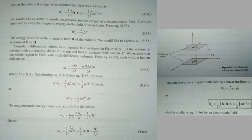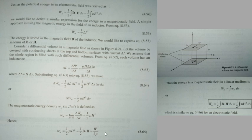Or else, we have wm equal to half B dot H, because mu H equals B. So wm equals half B dot H. Or alternatively, wm equals B square divided by 2 mu.